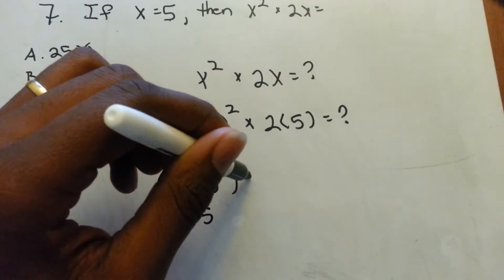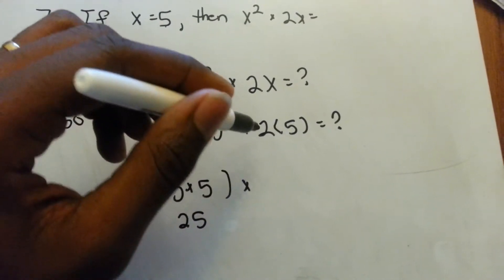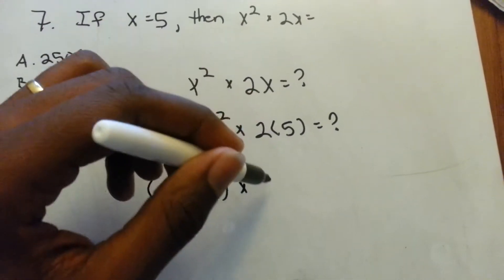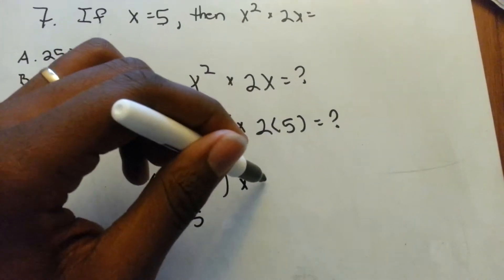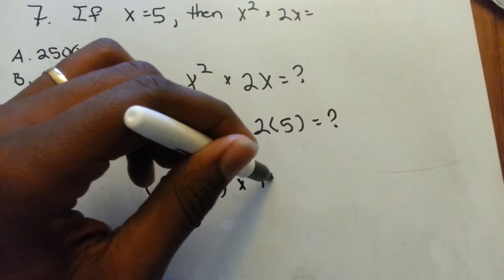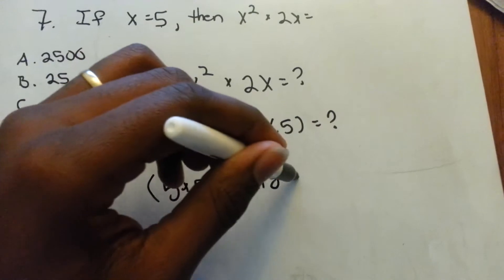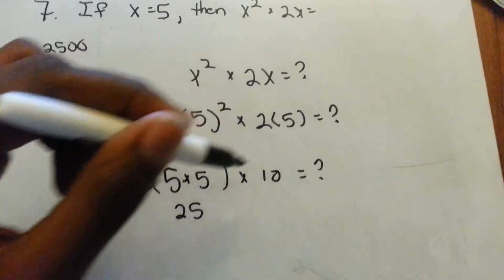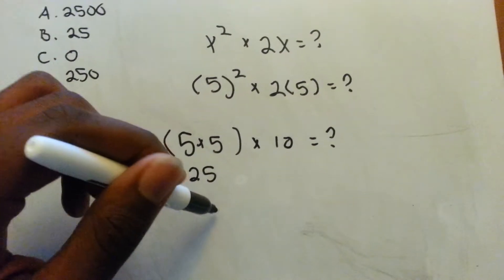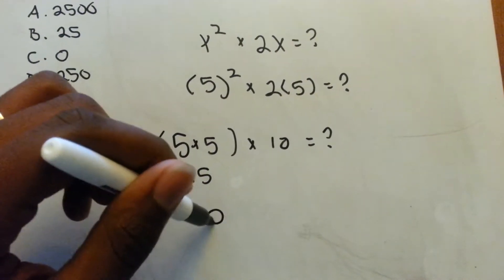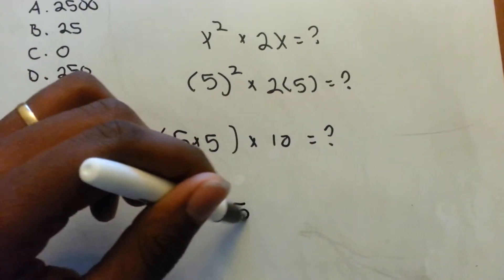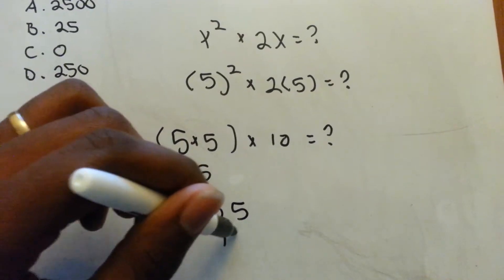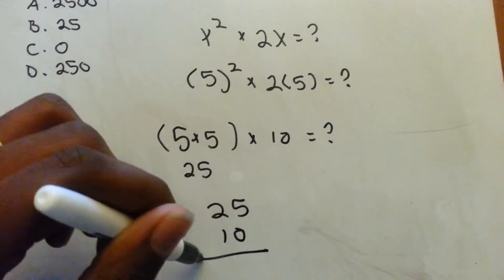Then multiply that by 2 times 5, which is 10. So you have to multiply 25 by 10 to get your answer.